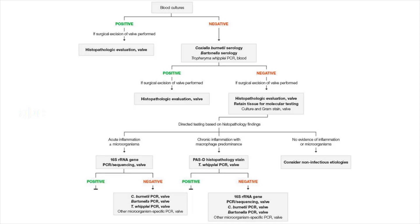If the patient undergoes valvular resection, histopathology and staining of the resected valve is recommended, with evaluation by a pathologist with specific expertise in infectious diseases pathology. If a microbiological diagnosis has not been established, molecular testing of fresh excised valve tissue, or formalin-fixed paraffin-embedded valve tissue if fresh tissue is unavailable, should be guided by histopathologic evaluation and includes broad-range bacterial PCR and sequencing, especially in the presence of acute inflammation, as well as specific PCR assays for Tropheryma whipplei, Coxiella burnetii, and Bartonella species. If there is chronic inflammation with macrophage predominance, Tropheryma whipplei PCR is especially recommended. Ideally, a representative sample of valvular tissue should be specifically collected in the operating room for molecular testing.